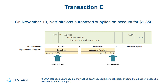Accounts payable is a liability account and is not part of AED, so it increases on the credit side. This liability — this obligation of $13.50 that we need to pay to the supplier in the future — is established. Accounts payable is credited $13.50. In the accounting equation, assets increased on one side (supplies) and the liability accounts payable increased on the other side, so the accounting equation balances.